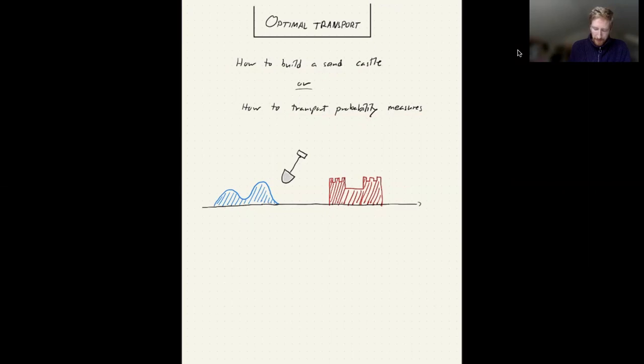So I have a drawing down here with one pile of sand to the left here. And this pile of sand, I'm going to call it the source. And I'm going to let x be this space we're on. And I'm going to model my source by a probability measure, mu on x. And then we have a sandcastle to the right, or an idea of a sandcastle, which we want to build. And this I'm going to call the target. I'm going to model it with the probability measure, nu on x as well.